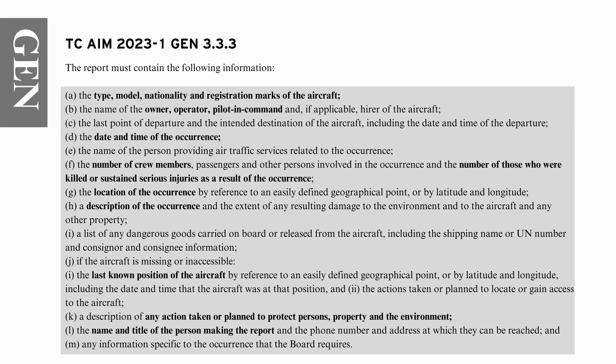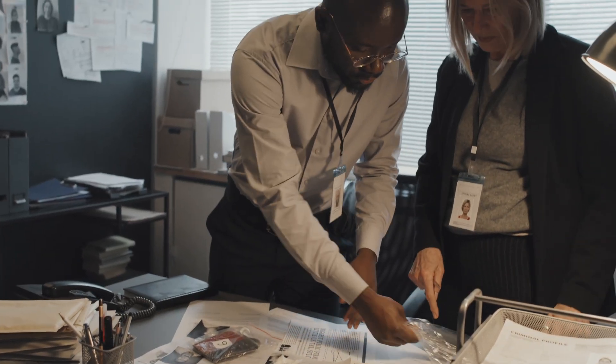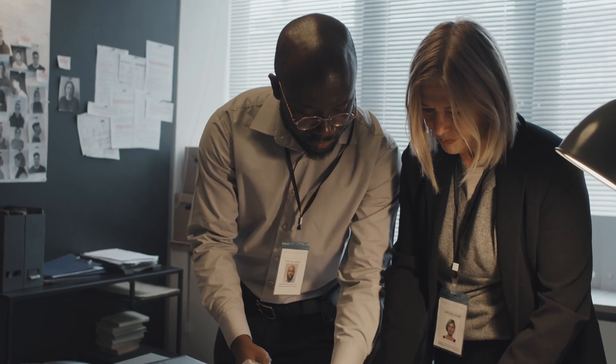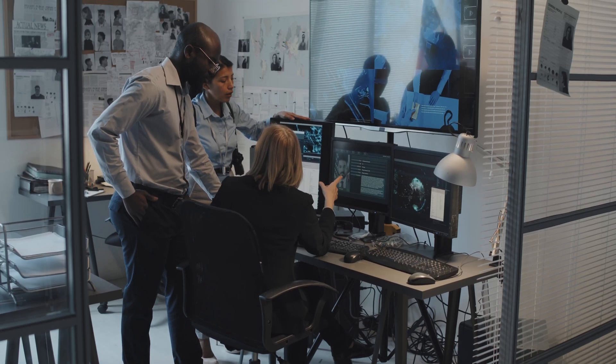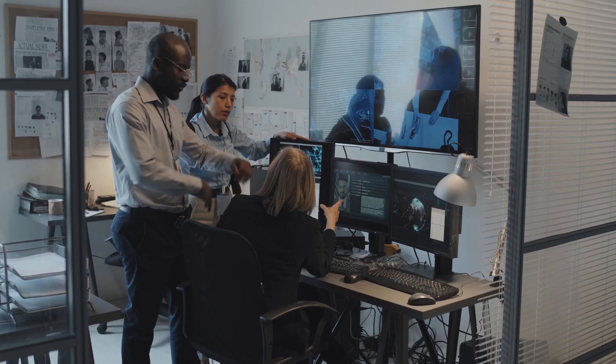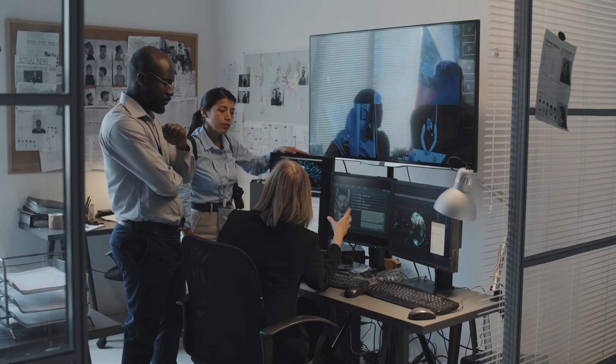The requirements for the incident report form are listed in the Transport Canada Aviation Information Manual, or the AIM, and lists particulars such as date, time, pilot flying, location, damage, and a narrative of the occurrence. It is required to determine the cause or causes of the accident and provide analysis to prevent reoccurrence. To do this, we'll need to build a narrative of the event. The narrative of the occurrence should be as detailed as possible and document multiple accounts depending on the severity of the incident.